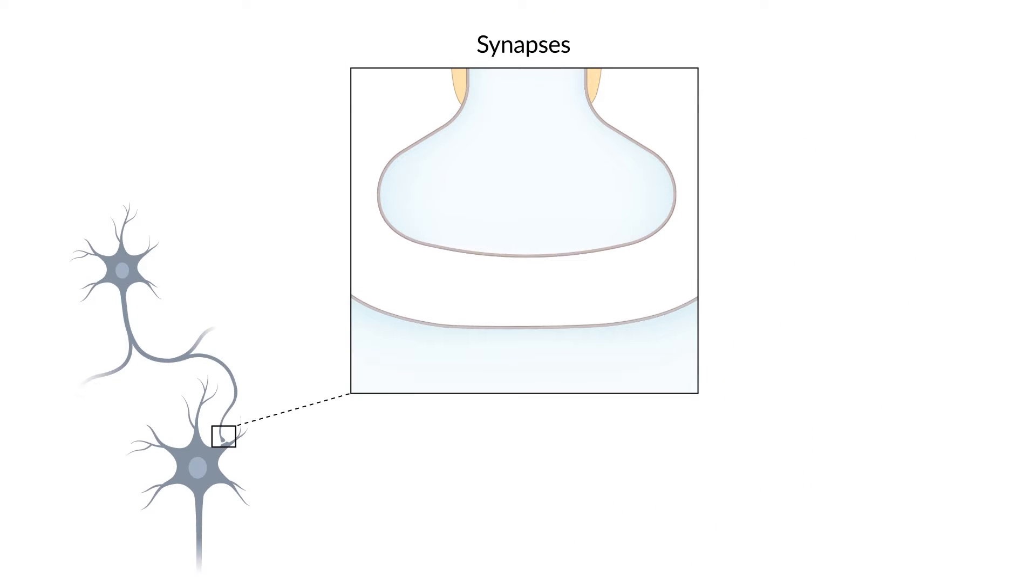Synapses are connection points between two neurons or a neuron and a specific target cell. These can be muscle, sensory or glandular cells.